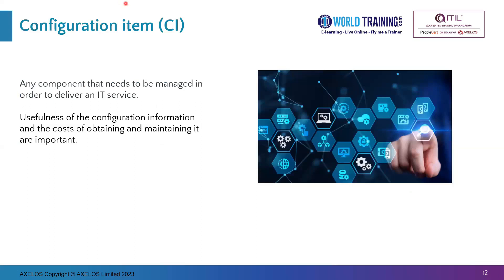Let's look at the definition of the configuration item. It is any component that needs to be managed in order to deliver an IT service. The usefulness of the configuration information and the costs of obtaining and maintaining it are important. The main objective of this practice is to efficiently provide useful information to the organization. Therefore, some examples of configuration items could be certain applications, certain networks, systems, and software licenses, because all of them need to be managed in order to deliver certain IT services. Whatever components the practice brings under its control as configuration items should be defined by the usefulness of the information and the cost of obtaining and maintaining it. It would be unnecessary to record and maintain information which is not of much use.